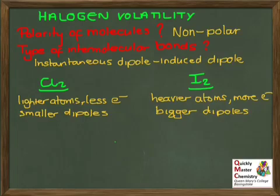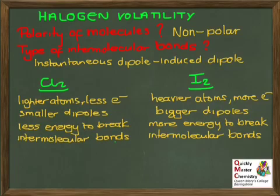With more electrons, iodine can form bigger, stronger instantaneous and induced dipoles. We need to relate this to energy: with the smaller dipoles in chlorine molecules, there's less attraction between the molecules — a weaker attraction — so it takes less energy to break the intermolecular bonds. The opposite is true for iodine: with its larger dipoles, it takes more energy to break the intermolecular bonds between the iodine molecules.